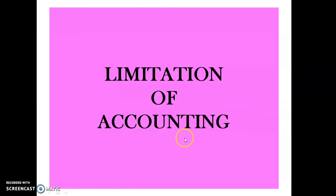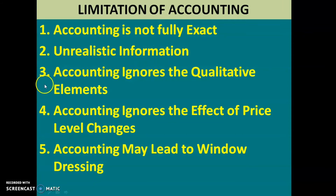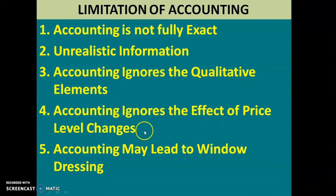Now let us move to the limitations of accounting — that is, drawbacks or demerits of accounting. Here are the five points of limitations of accounting. The first point is accounting is not fully exact. Second point is unrealistic information. Third point is accounting ignores the qualitative elements. Fourth point is accounting ignores the effect of price level changes. Fifth point is accounting may lead to window dressing.